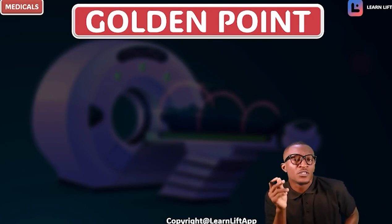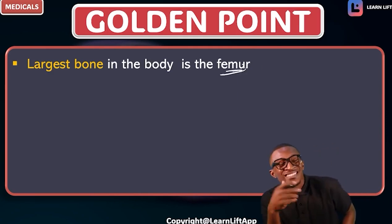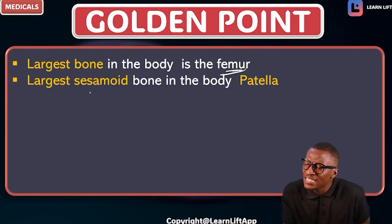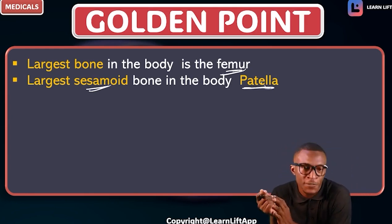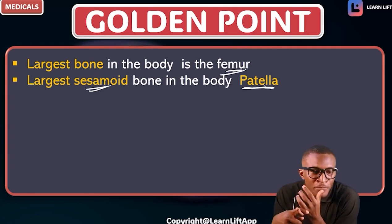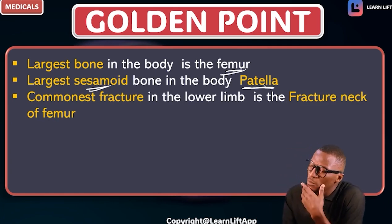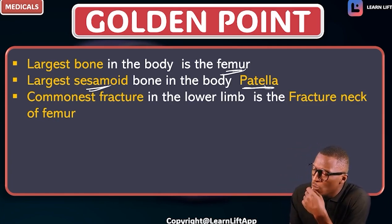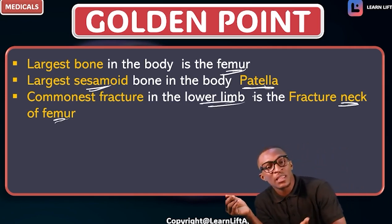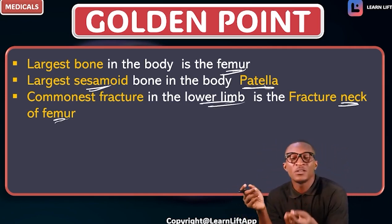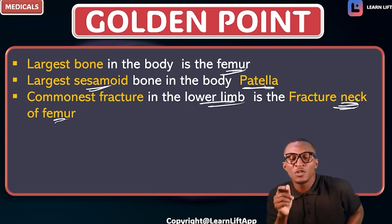What are the golden points to know from this class? First, the largest bone in the body is the femur. The largest sesamoid bone is the patella — these are MCQ-type questions. The commonest point of fracture in the lower limb is the neck of the femur. If a patient is rushed to hospital with a femur fracture, think of the neck of the femur.